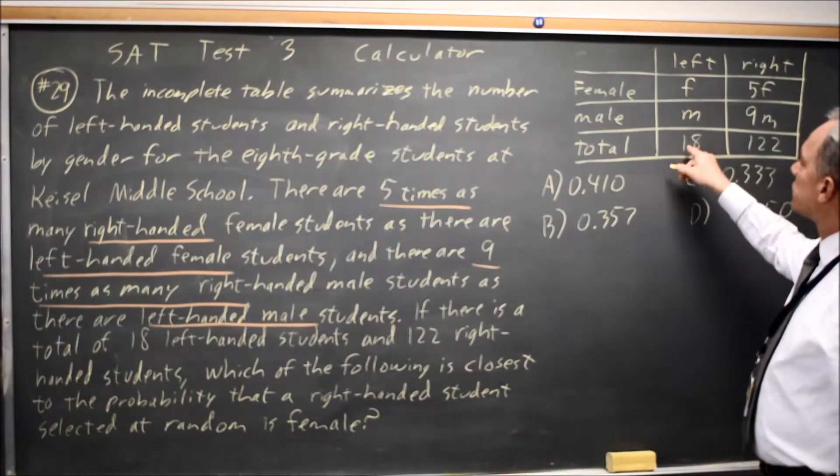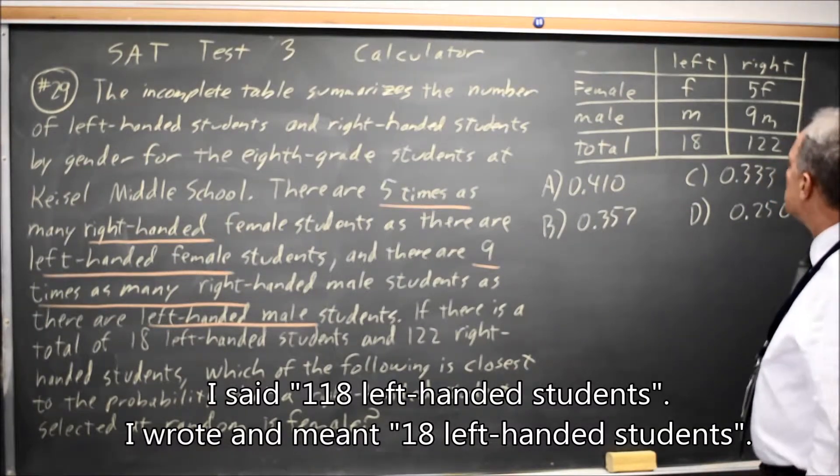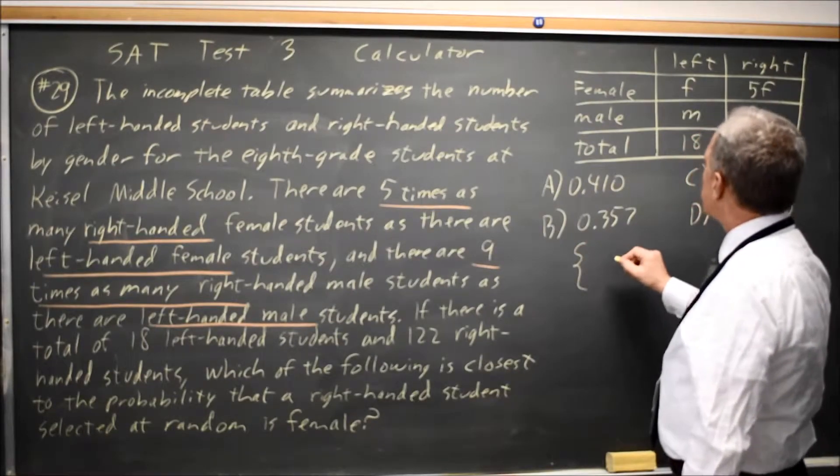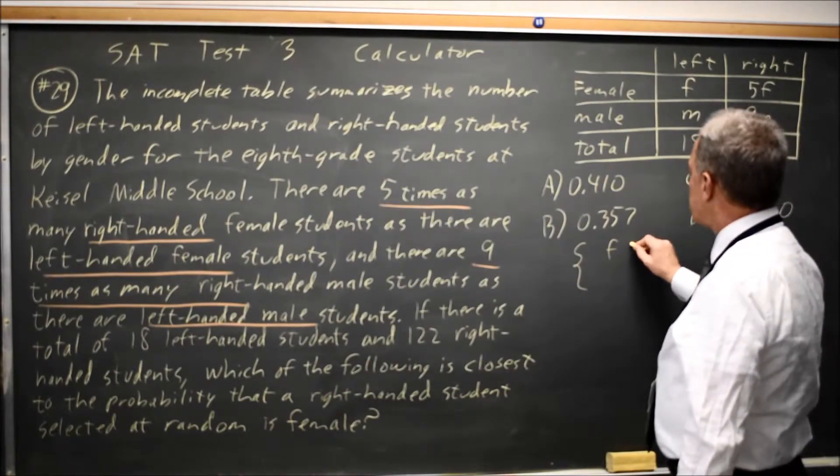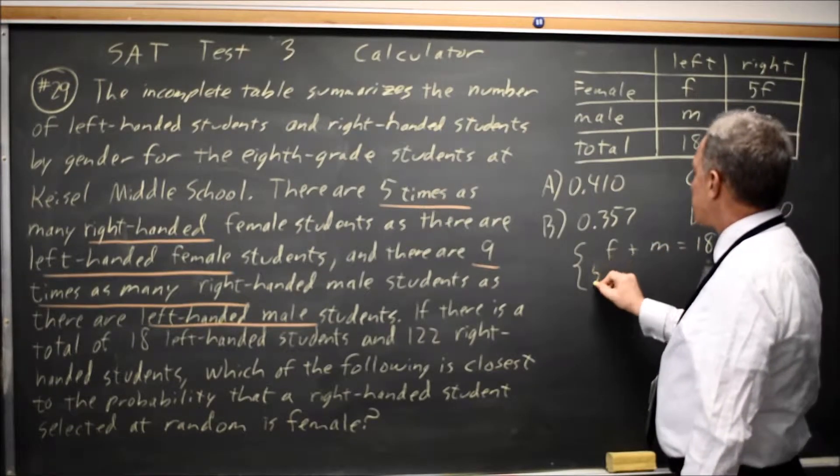There are a total of 118 left-hand students and 122 right-hand students, and that will give me my system of equations. The number of left is F plus M equals 18.